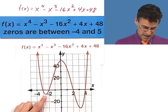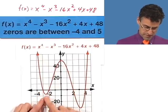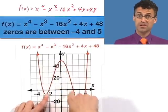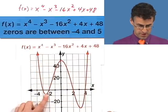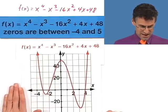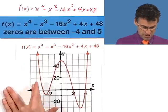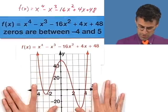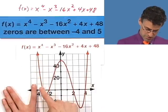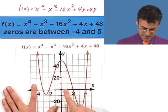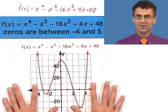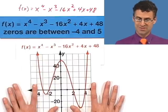And notice that the turning points, or the extrema - 1, 2, 3, which is the maximum allowable, because it's 4 minus 1, the degree minus 1. And check it out. Are there any zeros outside smaller than negative 4? No. Or larger than 5? No. All the zeros, or all the places where the curve crosses the x-axis, are indeed between negative 4 and 5.